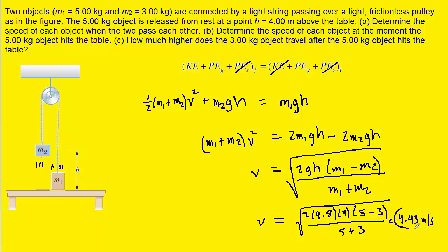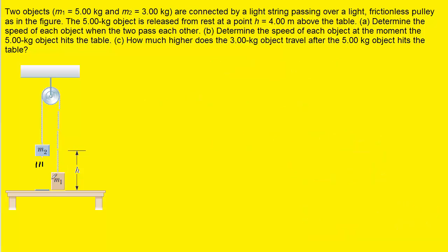Now for part C: m1 has hit the table and come to rest. m2 is still moving and is propelled upward. From part B, its speed at this point was 4.43 meters per second, so its initial velocity vi is positive 4.43 meters per second, since it's moving upward in the positive y direction. Through its momentum it continues upward until it reaches a certain height, at which point its final velocity will be 0 meters per second.